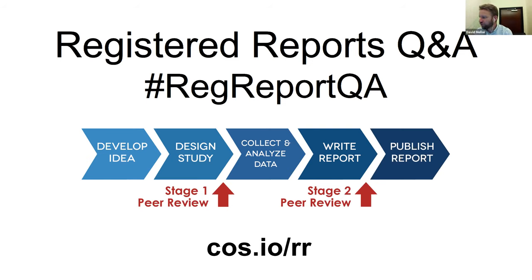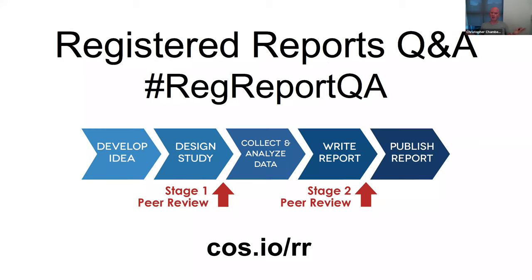What are your experiences with reservations of journal editors and society officials towards adopting the registered report format, and any insights on how to best win over the skeptics? This is a whole other one-hour webinar. I get this question a lot from editors who encounter barriers within their own editorial boards or get blocked higher up — they might even be a chief editor but then go to some publications committee of essentially academic bureaucrats who say no, without even explaining why. I have somewhere a bingo board of reasons editors and societies give for why they don't want to do registered reports.